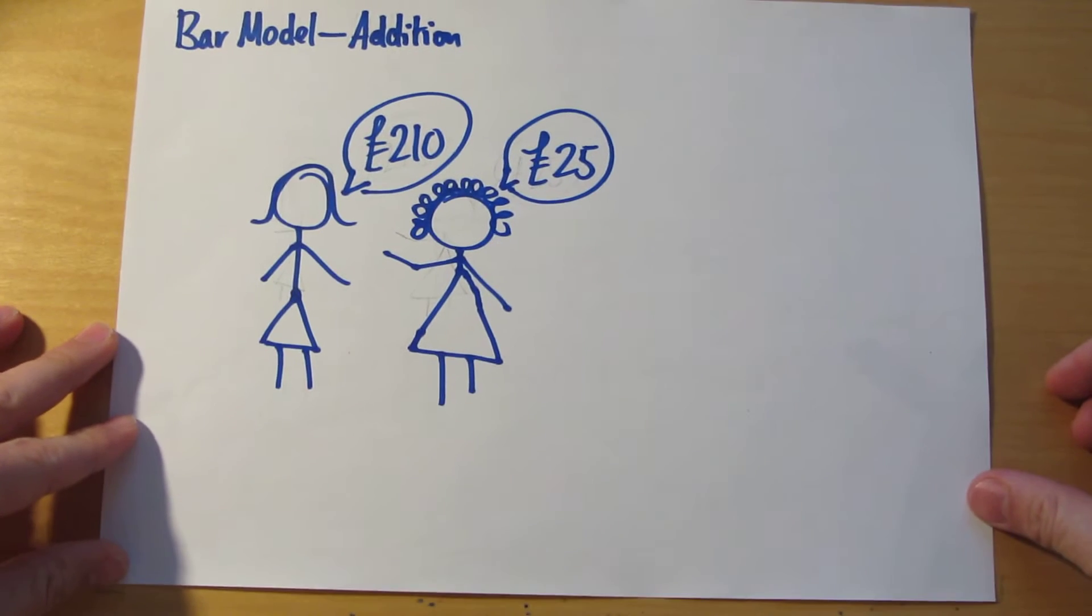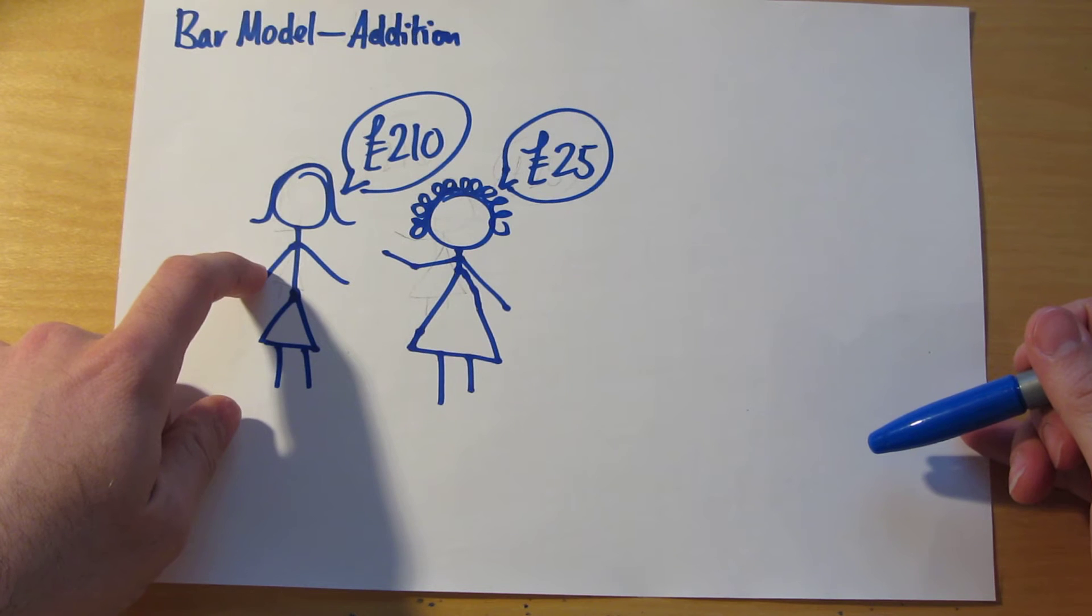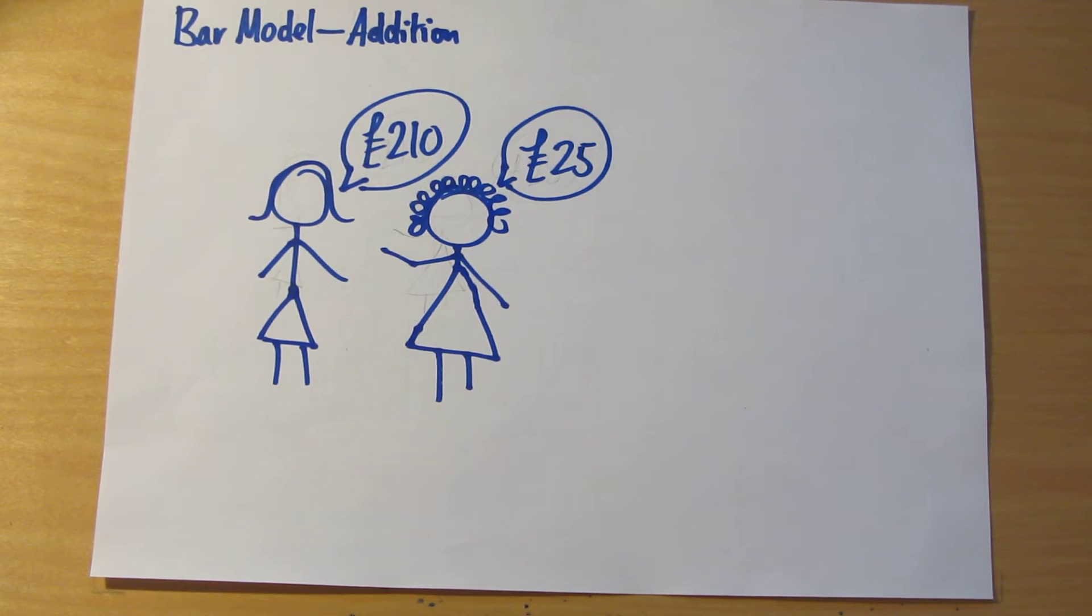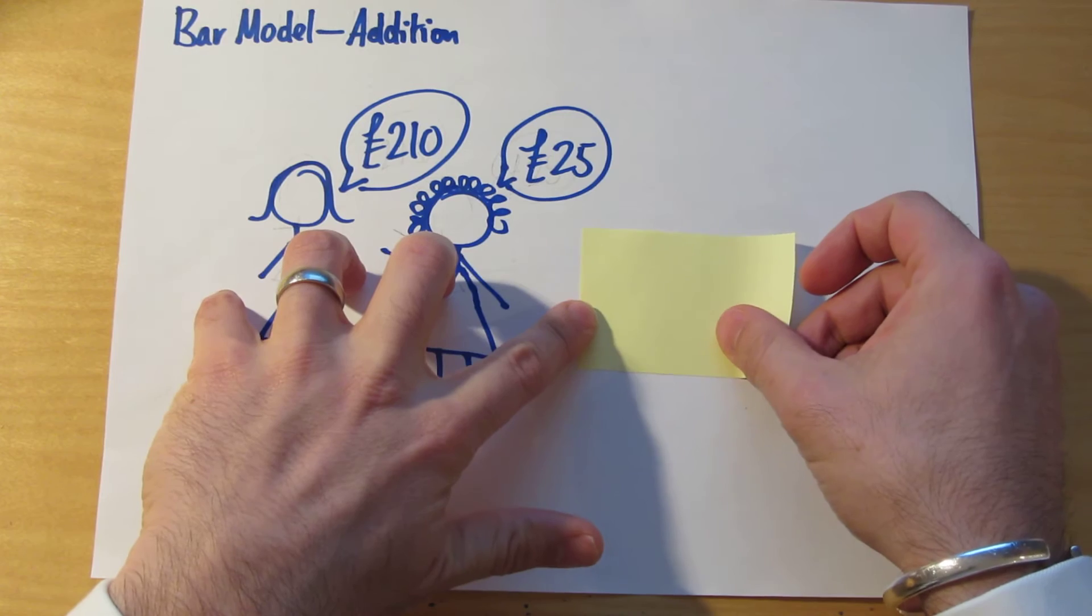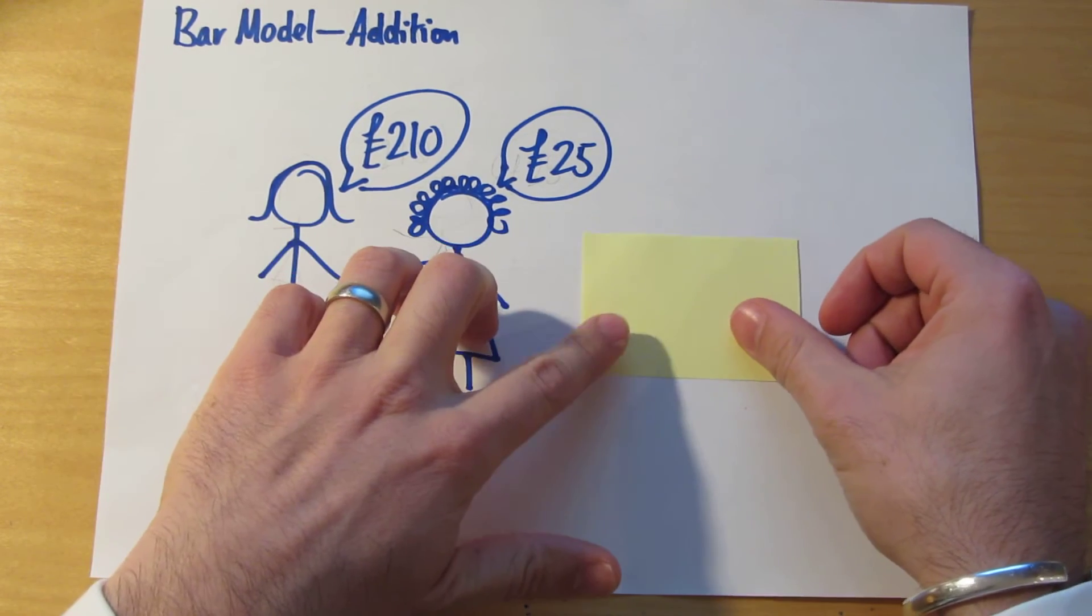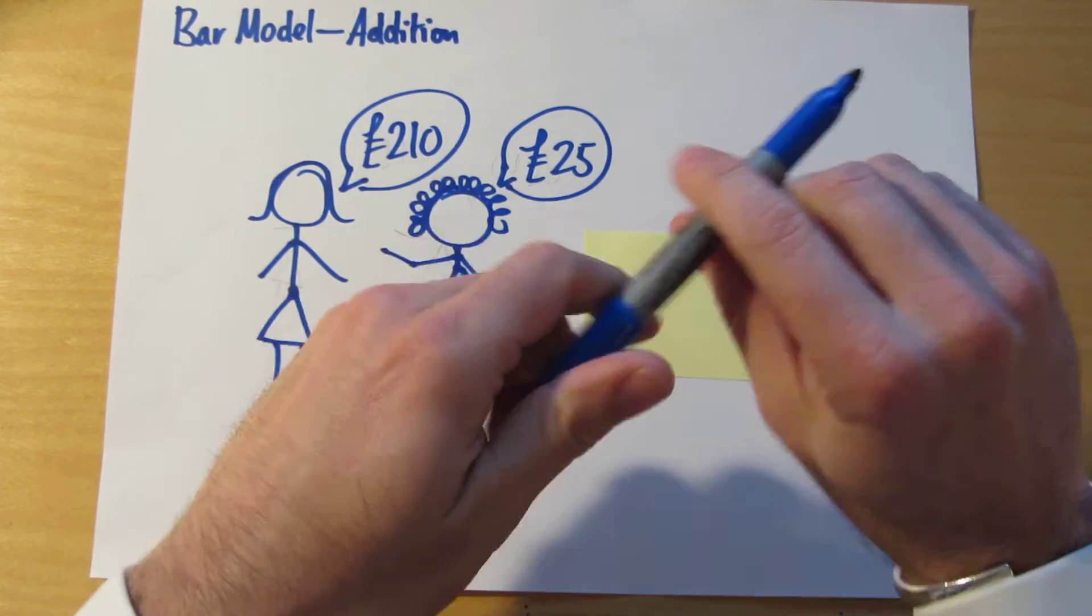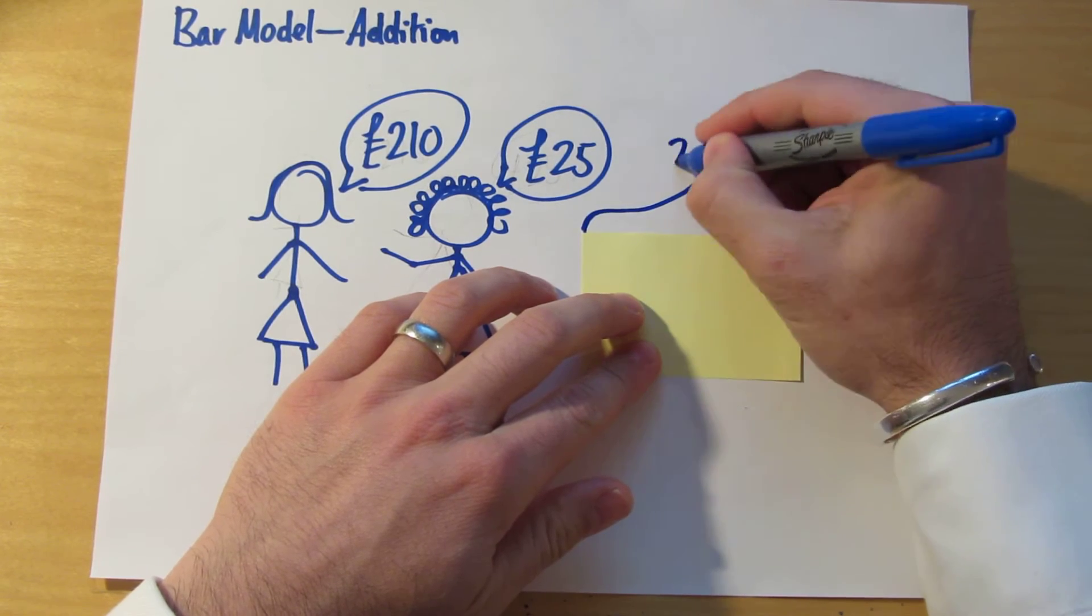Let's begin with an addition problem. Here's a girl. She has saved £210 from all her pocket money and birthday presents over the last year. Today's her birthday and she's given £25 by her gran. How much has she got altogether now? Well, for the bar model to work, we need to have a rectangle. This rectangle is going to represent the money that she started with. This represents £210.